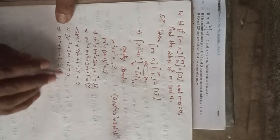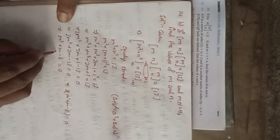Taking 2 as common: 2(m² + m - 6) = 0. Dividing both sides by 2 gives us m² + m - 6 = 0. This is our equation to factor.